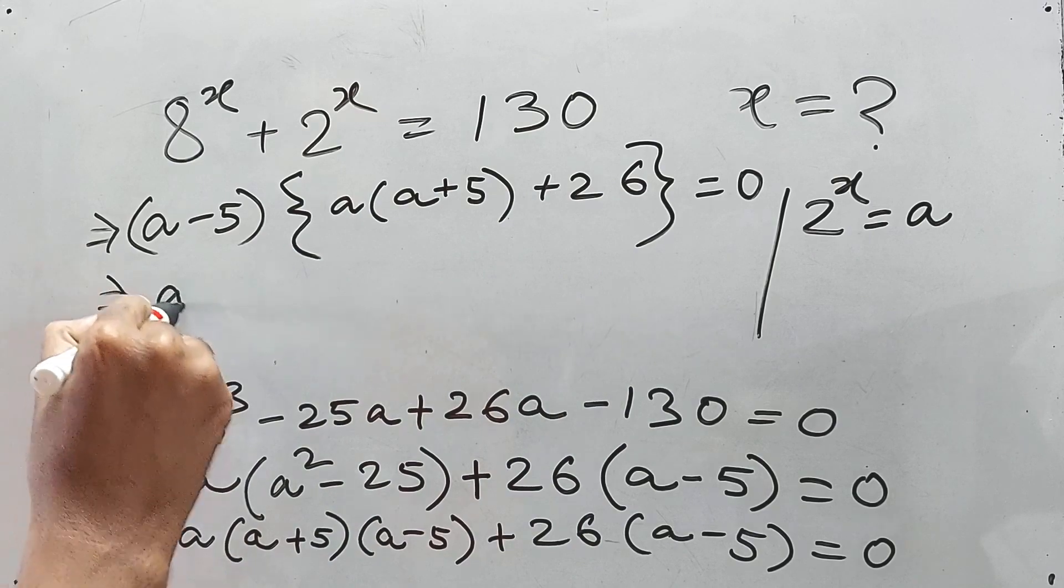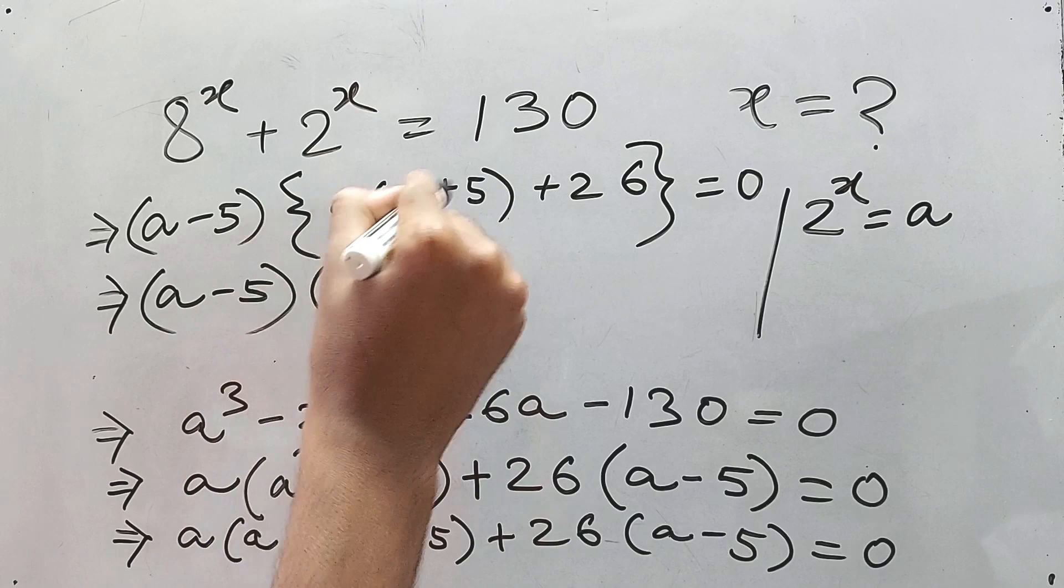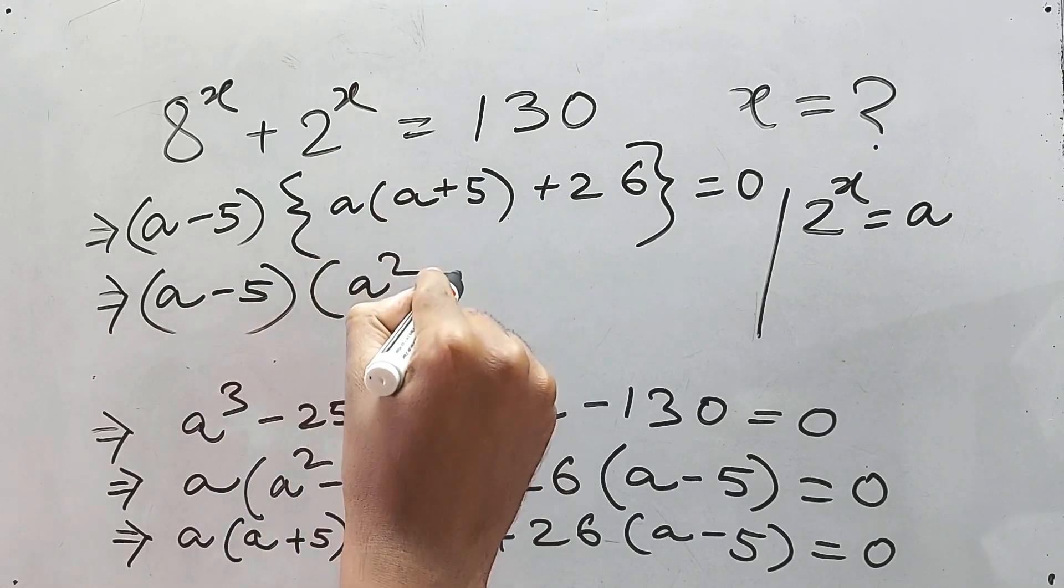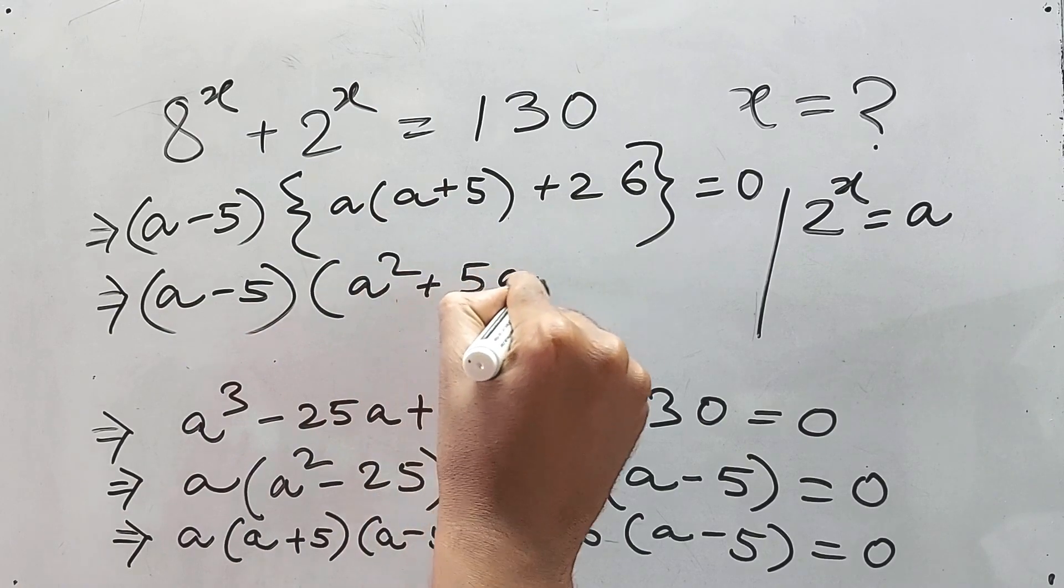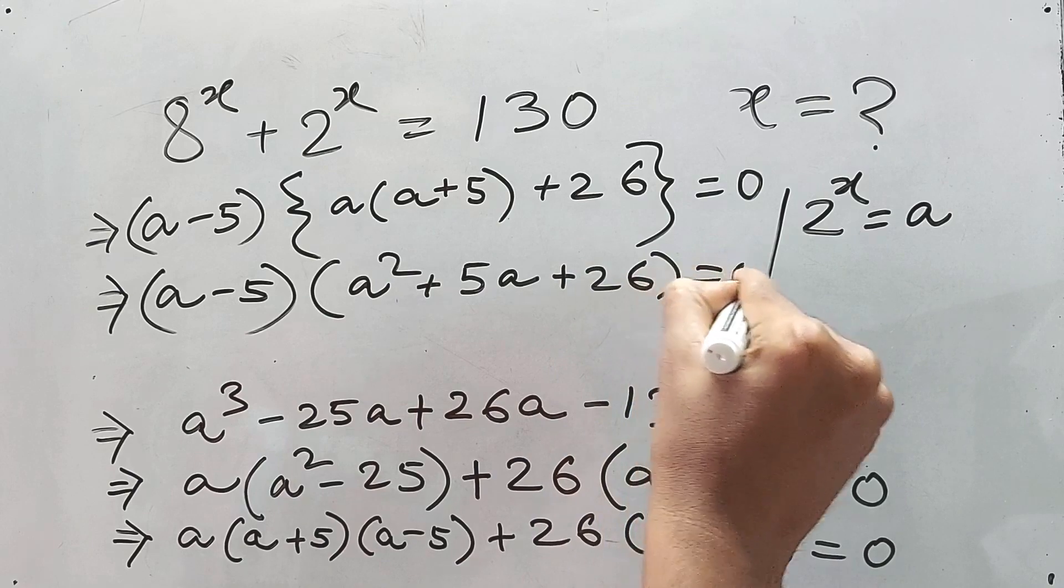Do one more step, that is a minus 5 into a square plus 5a plus 26 is equal to 0.